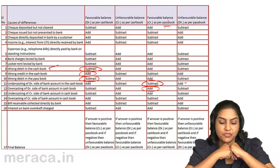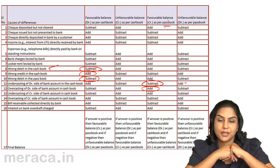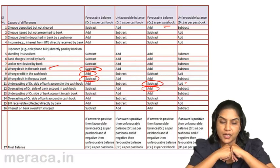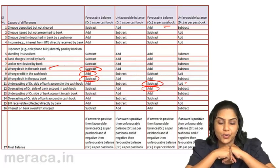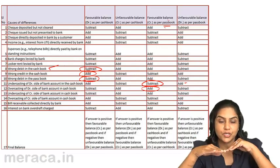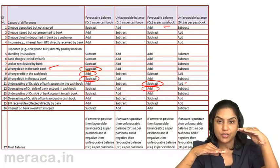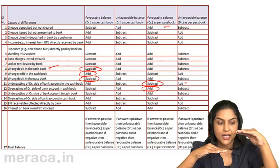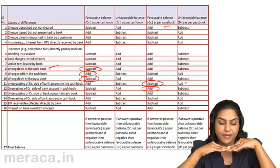Undercasting of the credit side of the bank account in the cashbook. The credit side is the payment side in the cashbook. If it has been undercast, it means you have shown less withdrawal. If you have shown less withdrawal, the balance is more — the cashbook balance is more. If you start from the cashbook, you would deduct to arrive at the passbook.